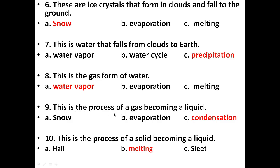Next: This is the process of a gas becoming a liquid. Options are snow, evaporation, condensation. The answer is condensation. Condensation is the process where gas becomes a liquid. Water vapor condenses to form water droplets, and this condensation leads to the formation of clouds.